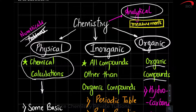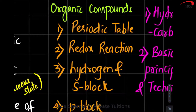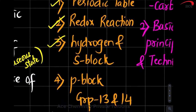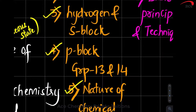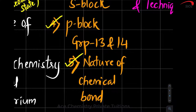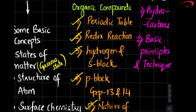Very little of analytical chemistry will be dealt with in our 11th and 12th standard syllabus. Our more focus will be on physical, inorganic, and organic chemistry. Inorganic chemistry is made up of chapters including: periodic table, redox reactions which deal with oxidation number, hydrogen and s-block elements, p-block elements (groups 13 and 14 in 11th standard), and nature of chemical bond — covering ionic bond, covalent bond, coordinate bond, metallic bond, hydrogen bonding, hybridization, and molecular orbital theory. So there are five chapters for inorganic chemistry.